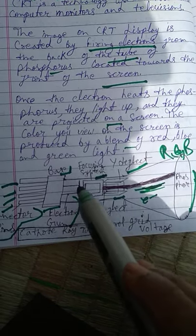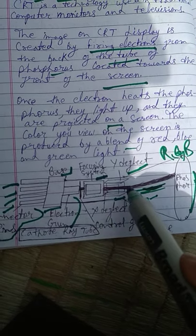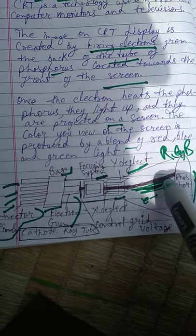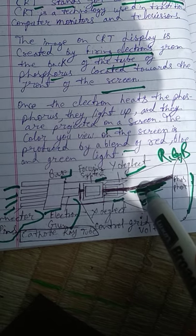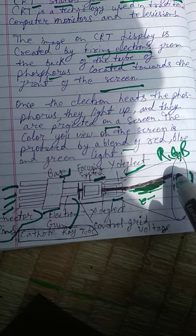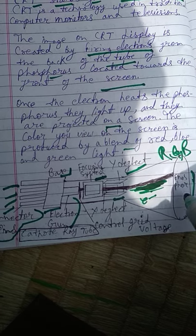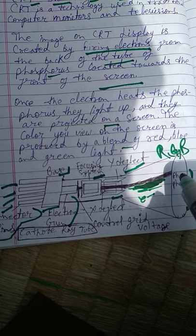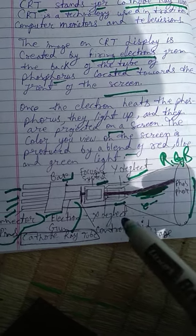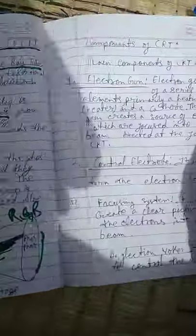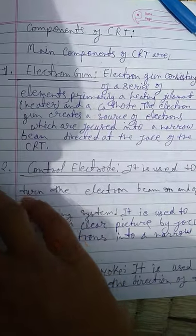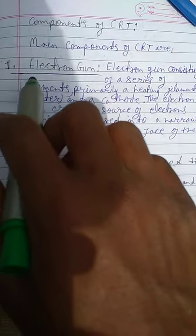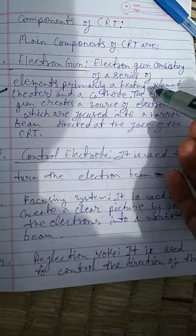The electron gun produces the electron beam. The dark line in the diagram shows the electron beam travelling to the phosphorous plate, which allows us to see the object on screen. That is the simple diagram of CRT — hope you understand the diagram and the main components.